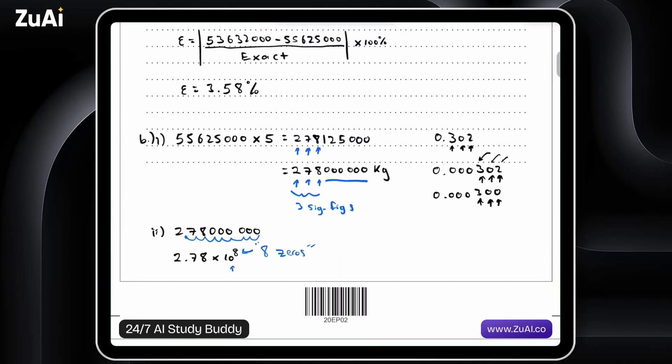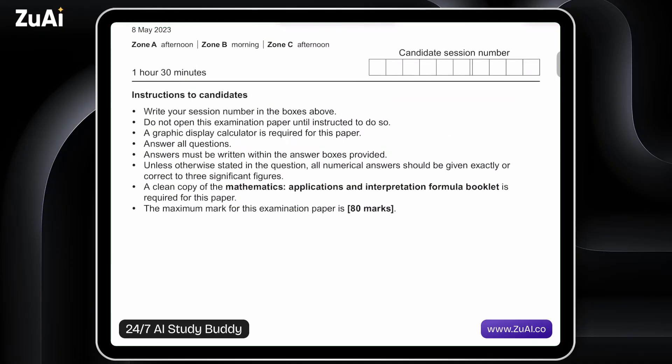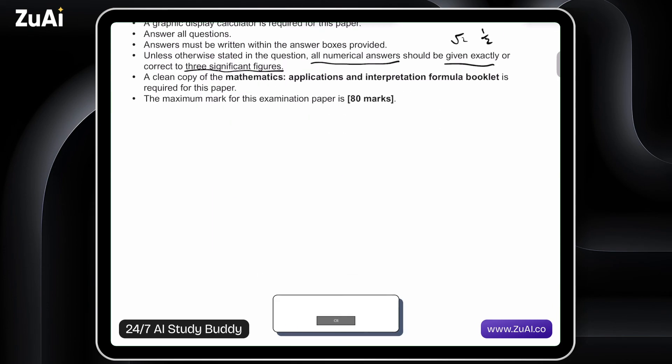Writing out in three significant figures is pretty important. It's at the beginning of the rubric, sometimes unnoticed. It says, unless otherwise stated in the question, all numerical answers should be given exactly. So for example, like root 2 or 1 half and so on, or correct to three significant figures. So it's something that is important throughout the exam.